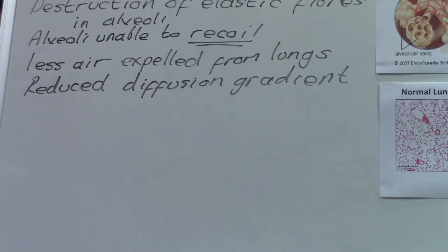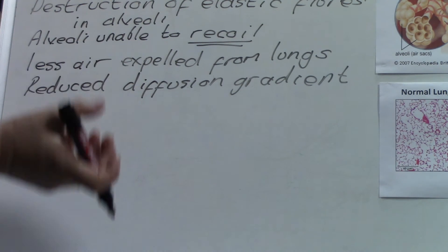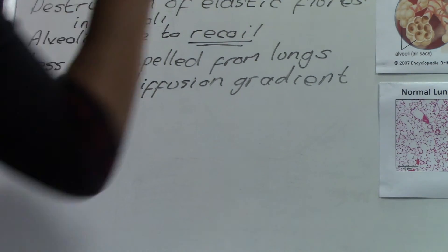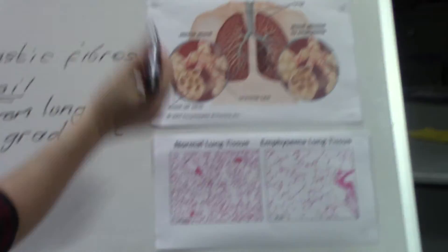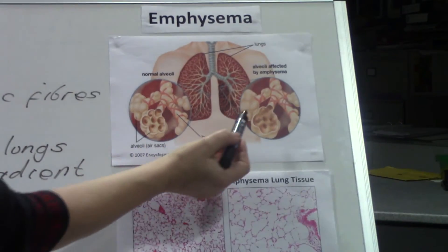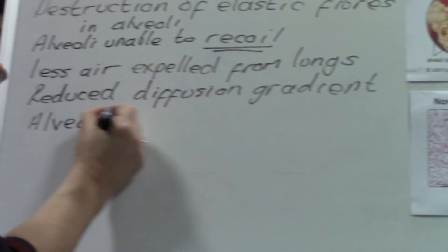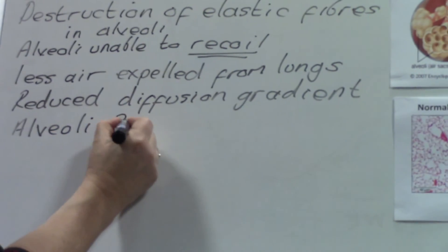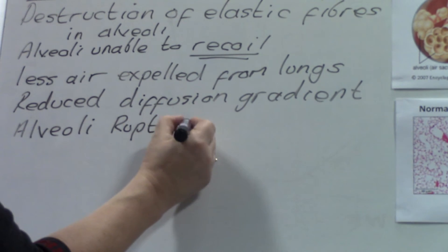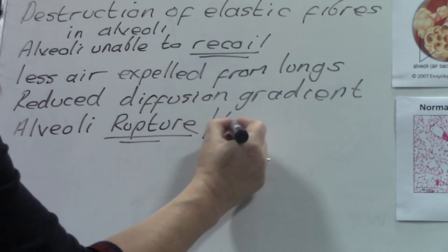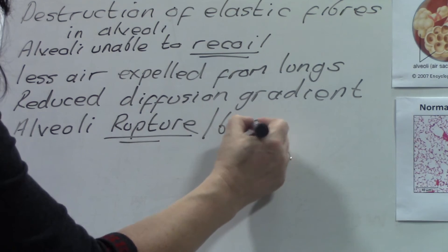A second problem is that because of this damage to the elastic fibres of the alveoli, when people breathe in, the alveoli can actually rupture. 'Rupture' is another good word to use in an exam — an alternative is 'burst'.